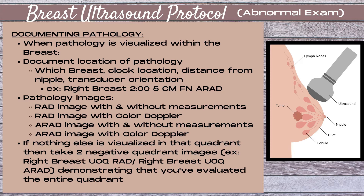Many new sonographers make the mistake of doing a length, a height, and a height — meaning they have two vertical measurements instead of two horizontal ones. Remember: two horizontal measurements and one vertical measurement. That's the most important key.